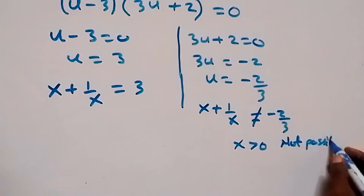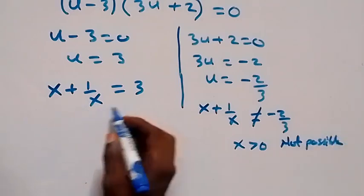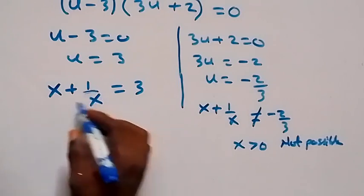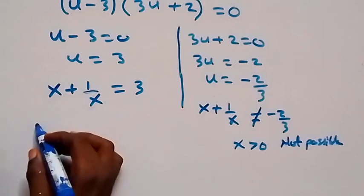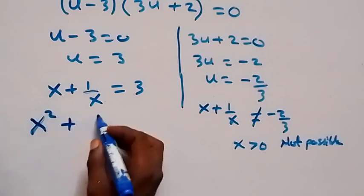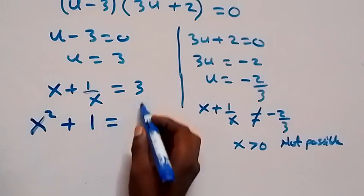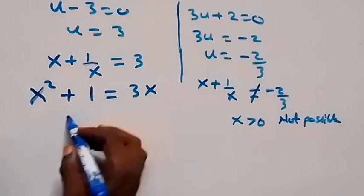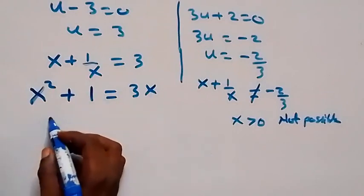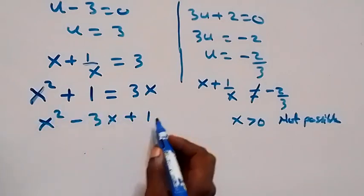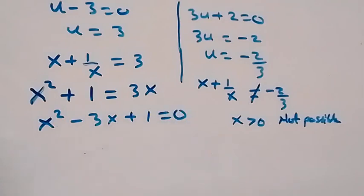From the valid case, we solve x plus 1 over x equals 3 by clearing the fraction — multiplying through by x. This gives x squared plus 1 equals 3x. Rearranging gives the quadratic equation x squared minus 3x plus 1 equals 0.